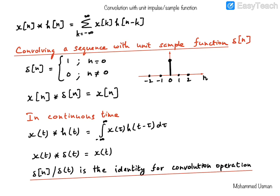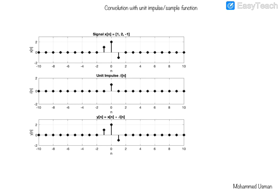Let us see this working on a discrete time signal. We have here a discrete time signal given by this function x of n, which is going to be convolved with the unit sample function delta of n. The result of the convolution, x of n convolved with delta of n, which we call y of n, happens to be the same as x of n. We clearly see that this function x of n and the result of this convolution are identical, which proves the point that delta of n is the identity for the convolution operation.